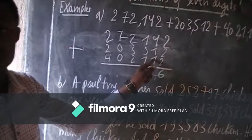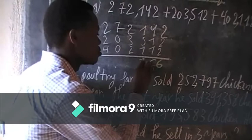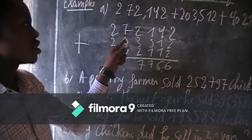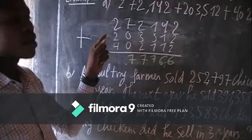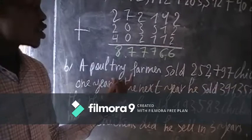Then 4 plus 1 is equal to 5, plus 1 equals 6. Then 1 plus 5 is equal to 6, plus 1 is equal to 7. Then 2 plus 3 is equal to 5, plus 2 is equal to 7. Then 7 plus 0 plus 0 is equal to 7. Then 2 plus 2 plus 4 is equal to 8. Very simple. Next.